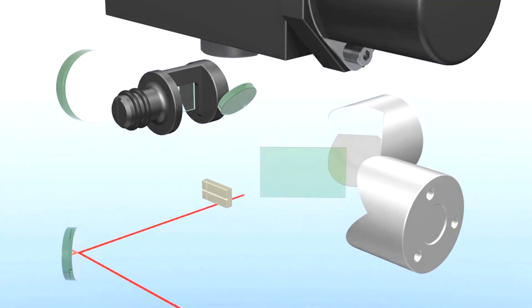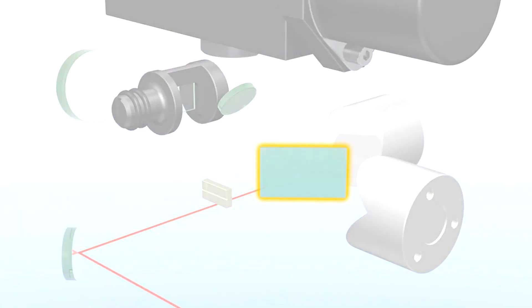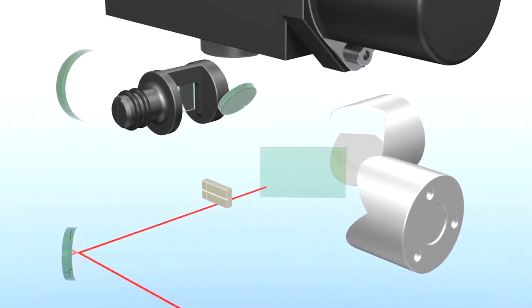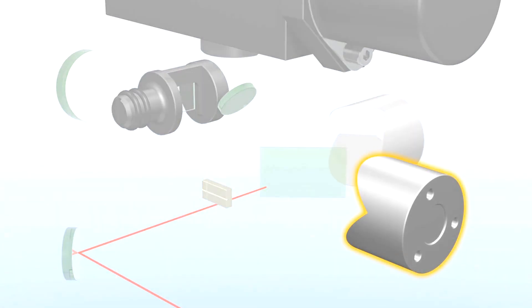When the laser beam enters, it strikes a splitter, which splits the beam in two directions. One hits the fixed reflector, the other the scanning reflector, which is in constant movement.